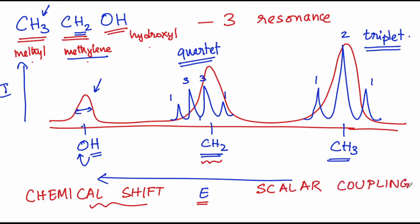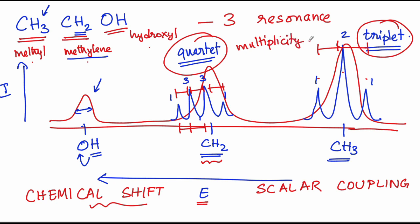This is an important parameter because the difference in energy between these two peaks and these peaks will actually be same in this case. And this will also match with the energy difference between the peaks that are found in the methyl group. Therefore, one can actually find out how many neighbors are present from the multiplicity and whether they are indeed neighbors from the magnitude of the scalar coupling.